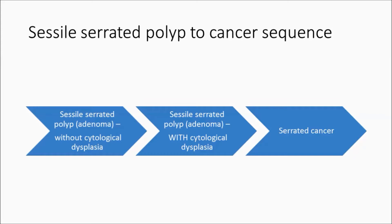Sessile serrated polyp is now preferred because this lesion usually has no dysplasia in it, and endoscopists are used to thinking of conventional adenomas where the term adenoma implies dysplasia in every case. These lesions aren't dysplastic, so use of the term sessile serrated adenoma can confer some confusion. The next step in the progression is the sessile serrated polyp with cytological dysplasia, a more advanced lesion, and then the final step is serrated cancer.